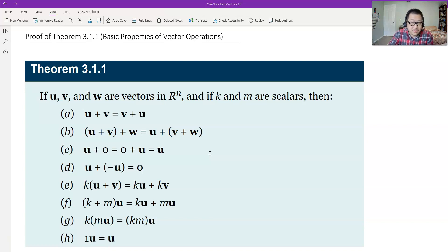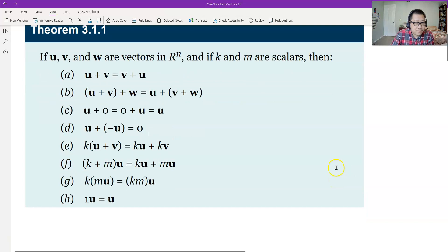We will generalize the idea into an abstract or general vector space in chapter 4 later. Now, see how to prove this property. This property is super easy to prove. It's straightforward. I will only prove the first two A and B and leave the rest for you.